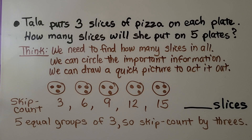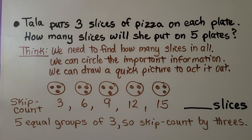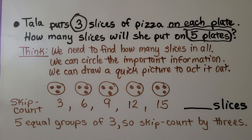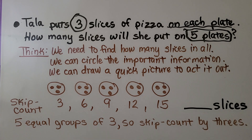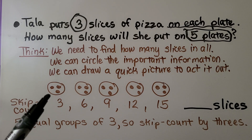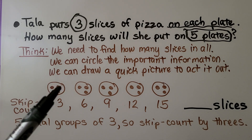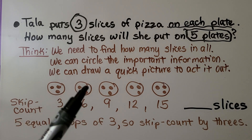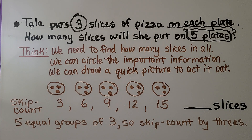Tala puts three slices of pizza on each plate. How many slices will she put on five plates? We need to find how many slices in all. We circle the important information: three slices on each plate and five plates. We can draw a quick picture to act it out, putting a little dot for each slice of pizza — five plates with three little dots on each one.